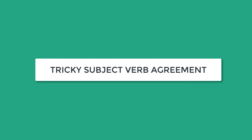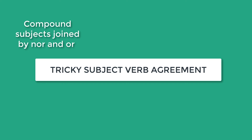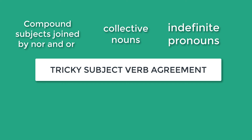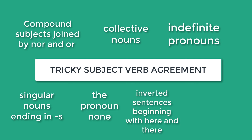To summarize, subject-verb agreement is for the most part fairly straightforward, but can be tricky when you have compound subjects joined by nor and or, collective nouns, indefinite pronouns, singular nouns that end in S, the pronoun none, inverted sentences beginning with here and there, and sentences interrupted by phrases. Make sure you go back and review the video for the parts you did not understand, and leave a comment below if you need further explanation. I hope you enjoyed this video — don't forget to give it a thumbs up and subscribe. I'll see you real soon.